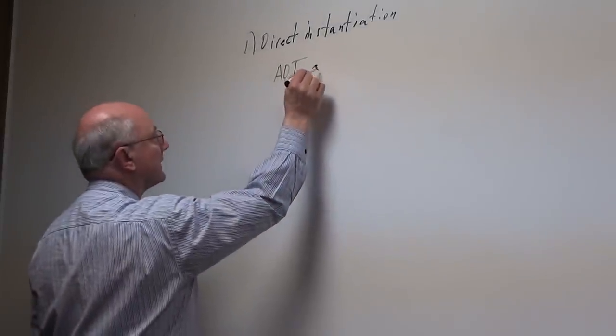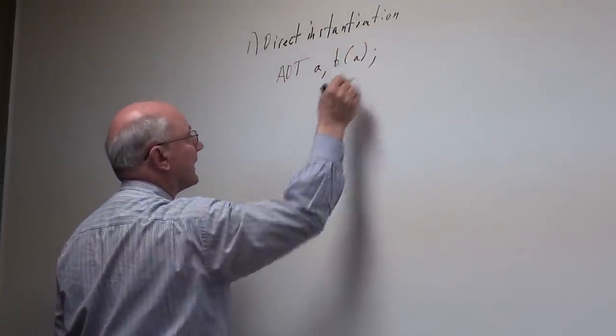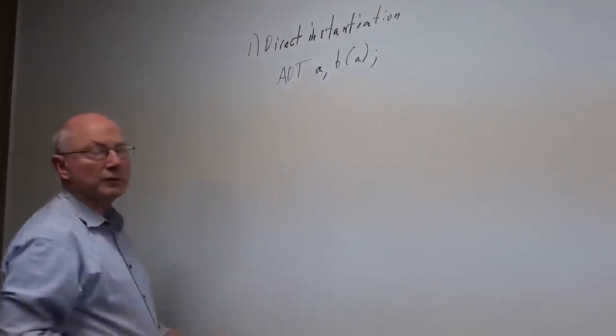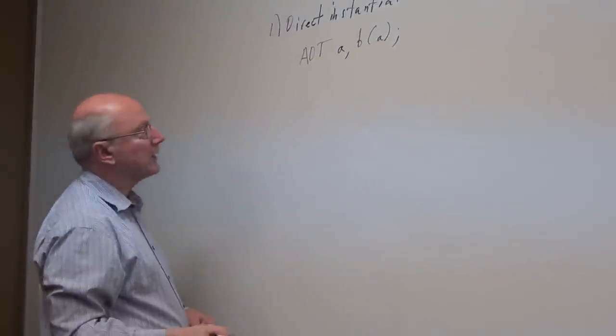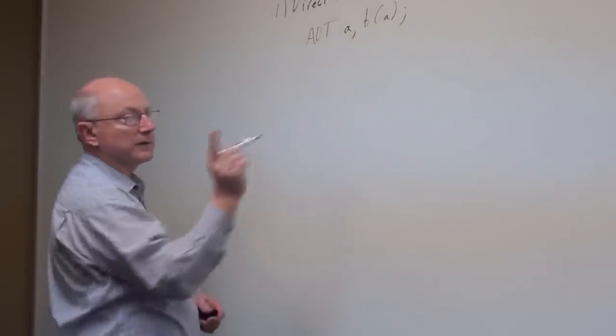if you then create another object B off of A, B gets created as a copy of A, and therefore will invoke the copy constructor. That's the first situation.